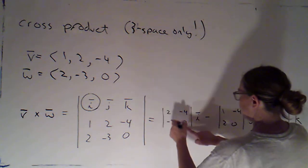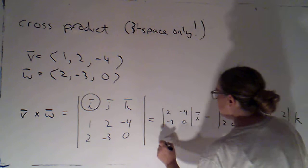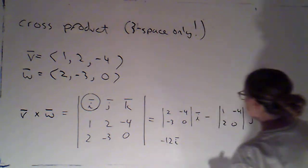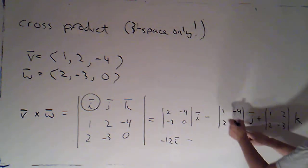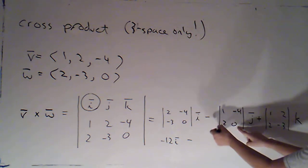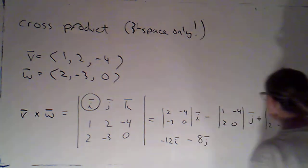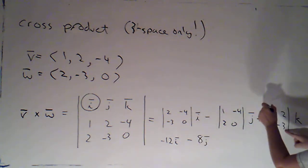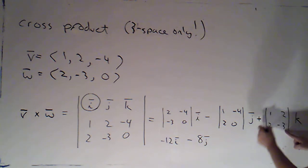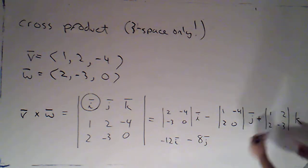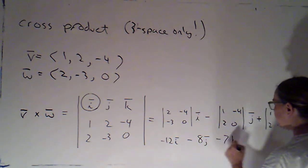So, let's see, this is 0 minus 12. So I have negative 12i minus 0 minus a negative 8 is 0 plus 8. So that will be 8j plus negative 3 minus 4 is going to become negative 7k.